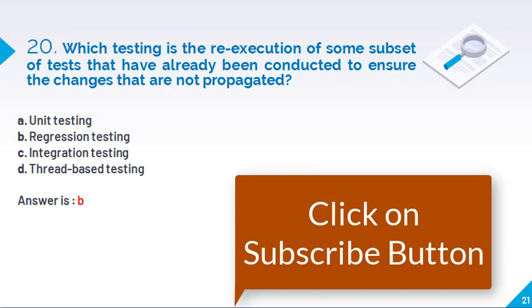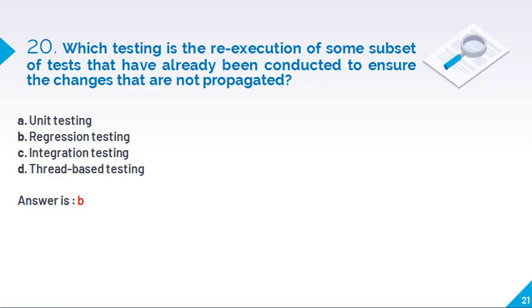Which testing is the re-execution of some subset of tests that have already been conducted to ensure the changes that are not propagated? So regression testing. Right. Because whenever we have developed once any software, then we have made any change, so we have to do regression testing means, again we have to test with the new functionality. Because as you know, unit testing means module testing, integration means different modules we can integrate with it, then we do the integration testing. And thread-based testing means that is the multiple processes or the transactions we are doing on the same application. At that time we are performing the thread-based testing.